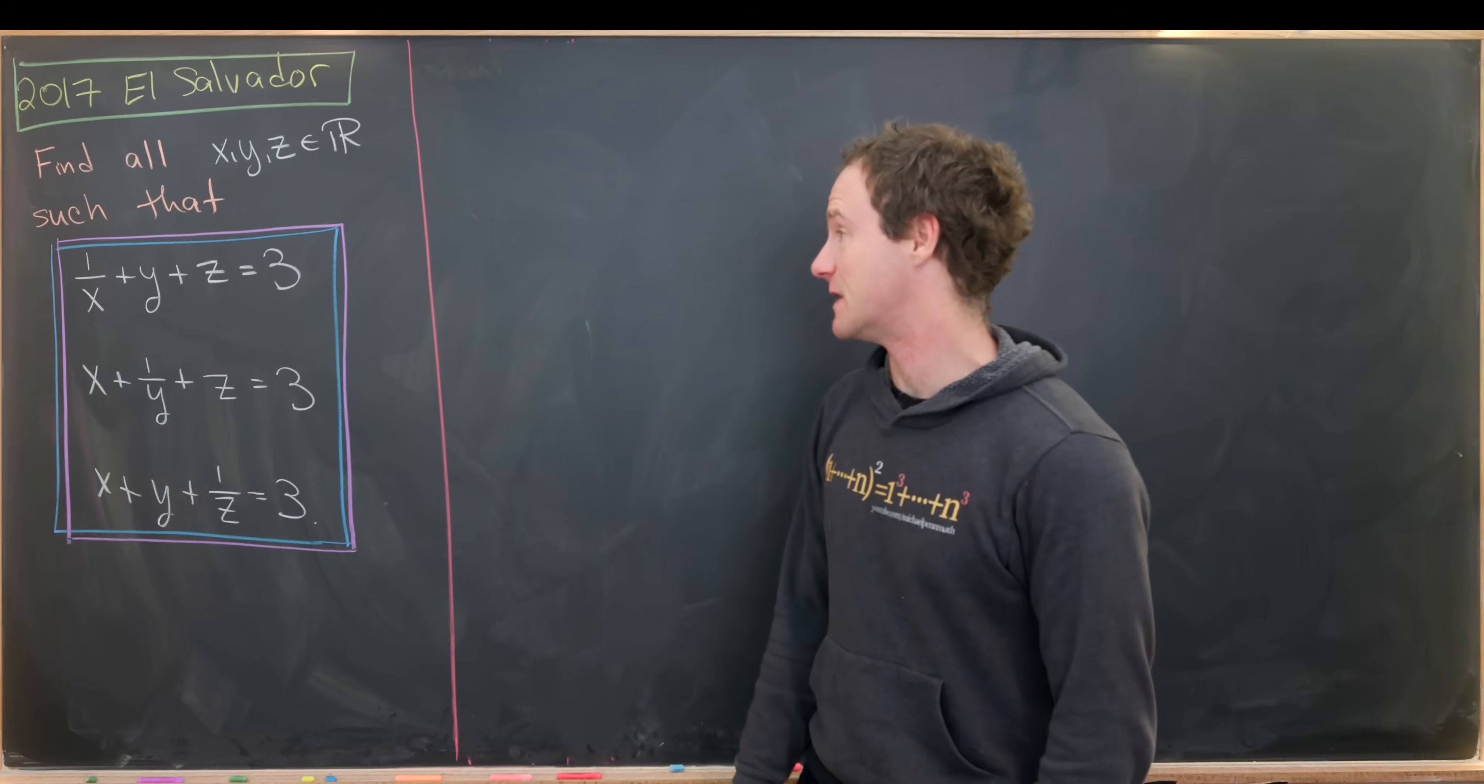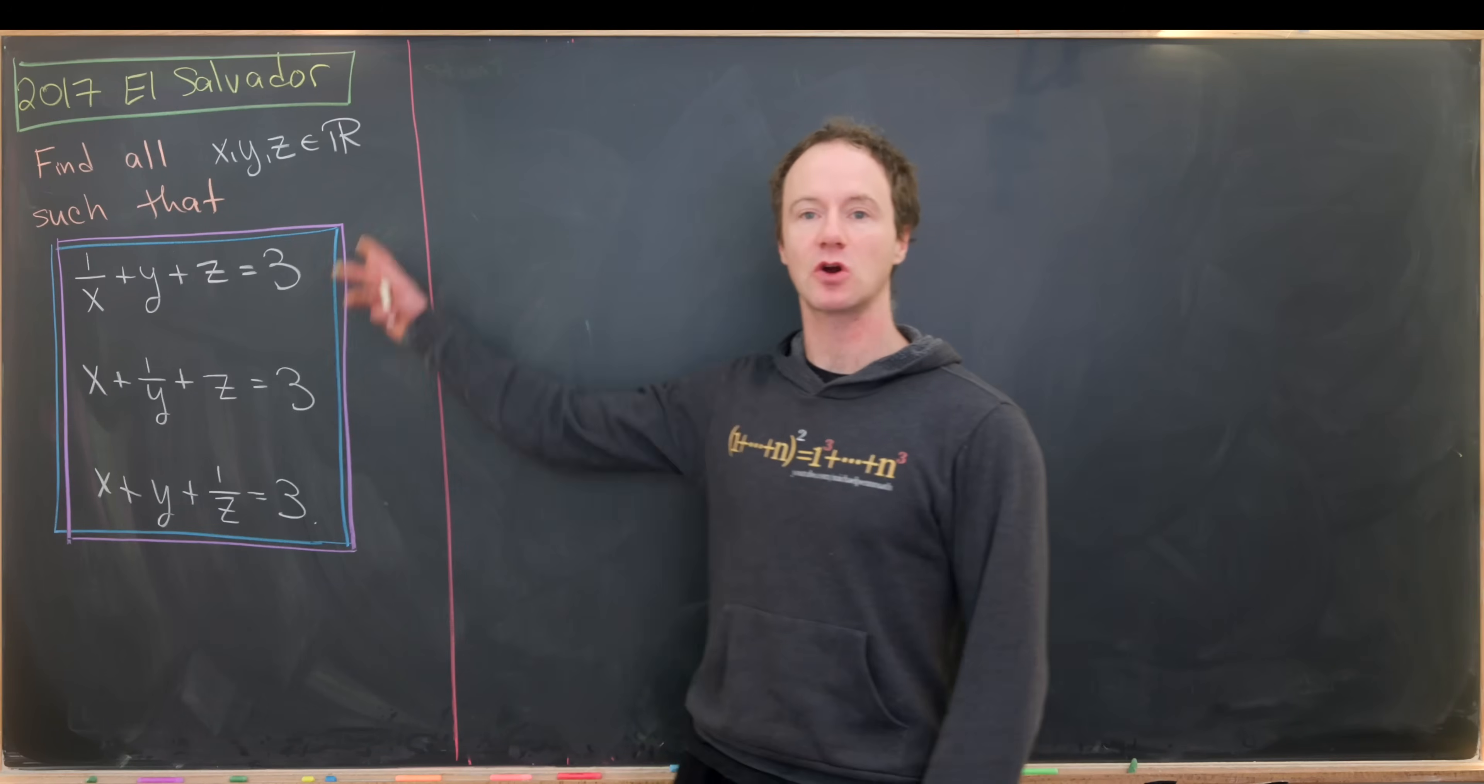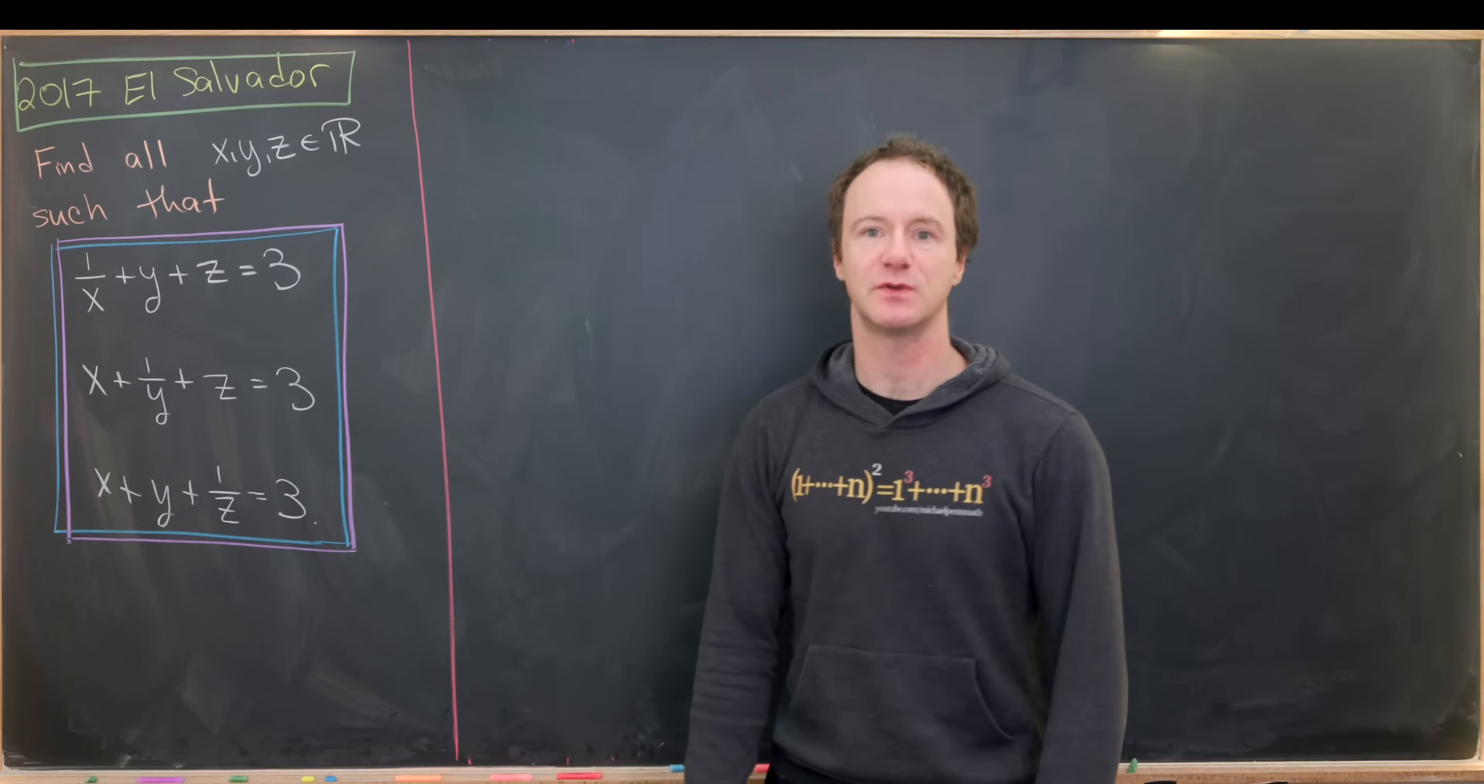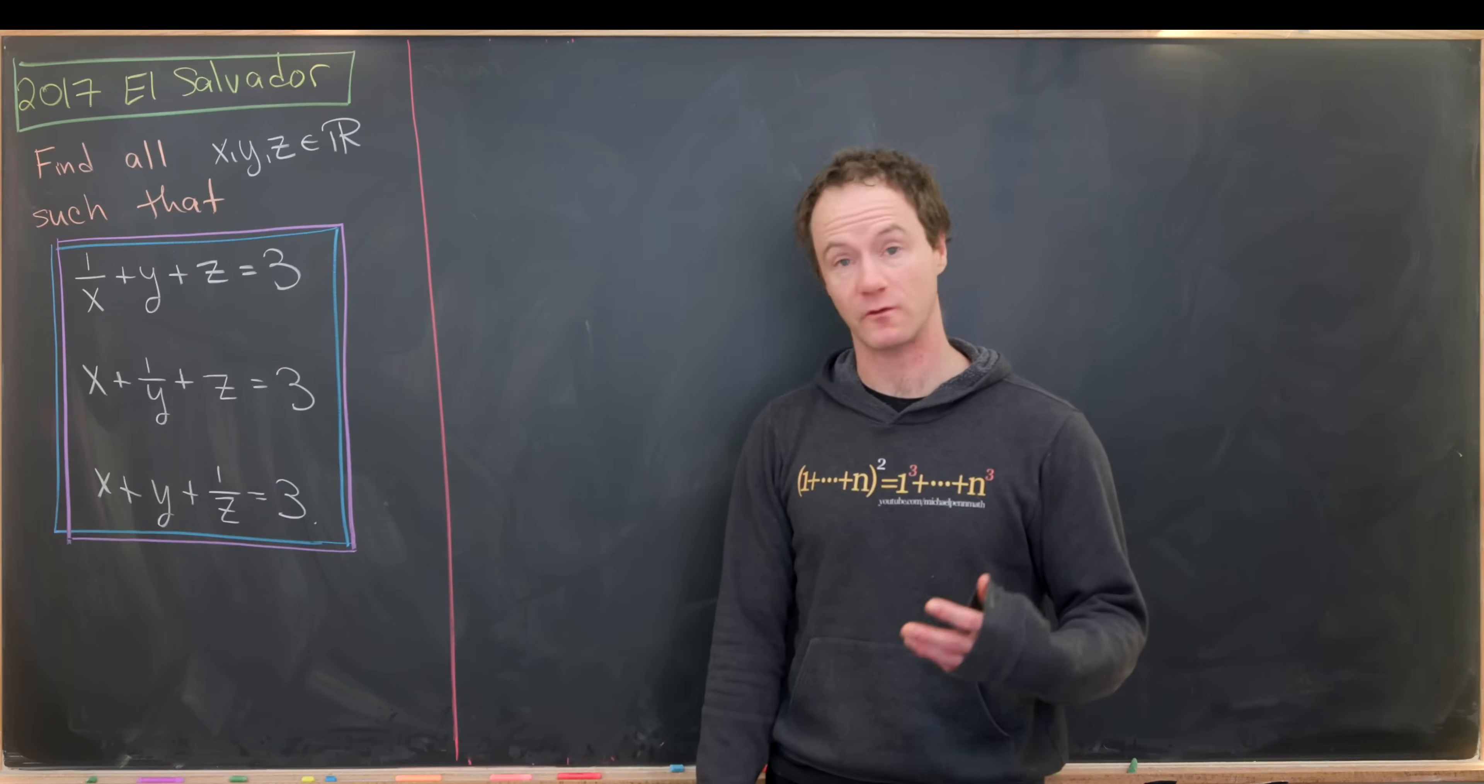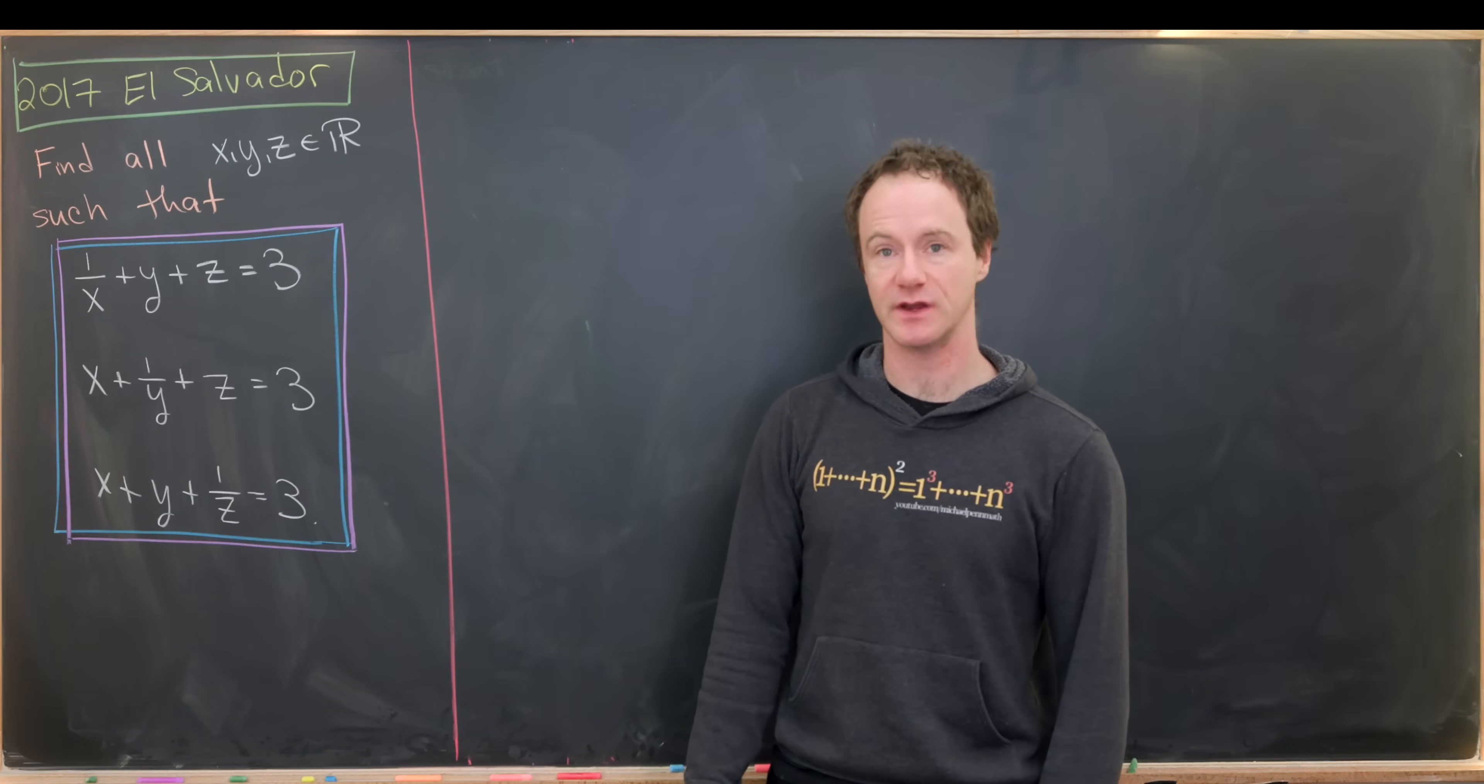Here I've got a nice symmetric system of equations from the 2017 El Salvador Math Olympiad. Our goal is to find all real numbers x, y, and z satisfying 1 over x plus y plus z equals 3, x plus 1 over y plus z equals 3, and finally x plus y plus 1 over z equals 3.